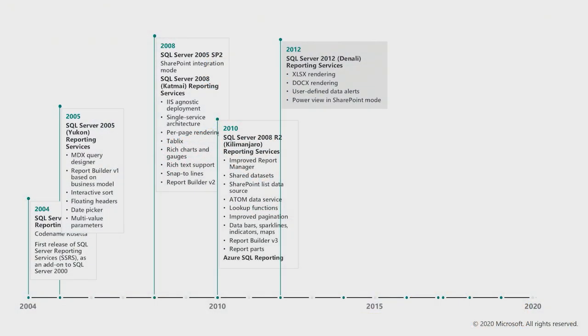Then we come to 2012 — eight years after the initial release. In the Denali release with SQL Server 2012, we saw the open Office formats: Excel and Word exports updated to XLSX and DOCX. User-defined alerts in SharePoint mode and PowerView in SharePoint mode — the first attempt at interactive reporting delivered in SharePoint with Reporting Services. What was interesting about that release is that a lot of new experiences were created from scratch. Alerting was not an evolution of an RDL feature; it was new. And PowerView was also created from scratch — I think a lot of the early Power BI experience came from an evolution of what we had in PowerView.